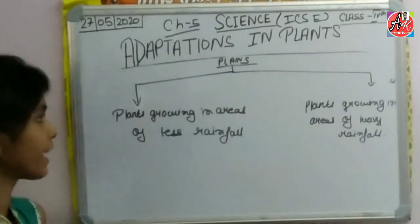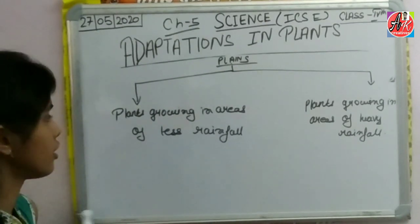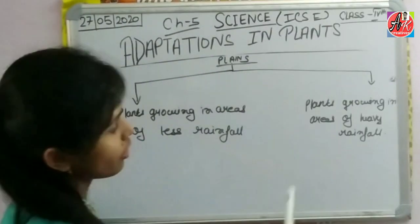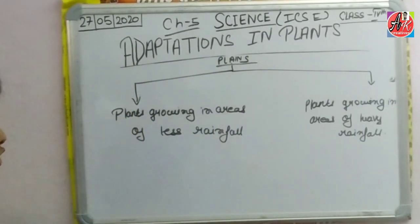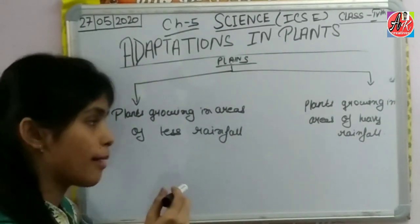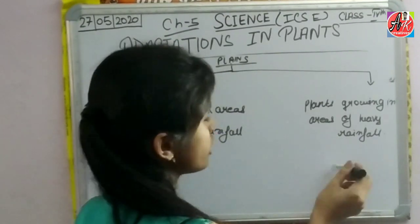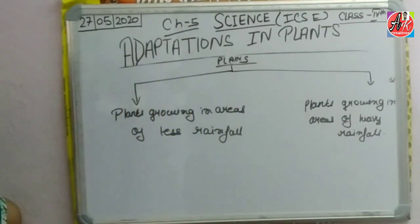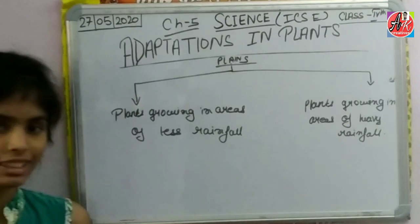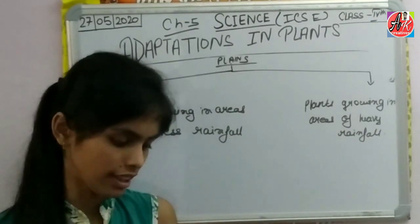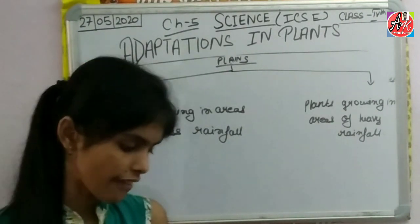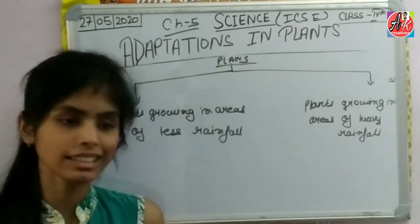There are two types: plants growing in areas of less rainfall, and plants growing in areas of heavy rainfall.